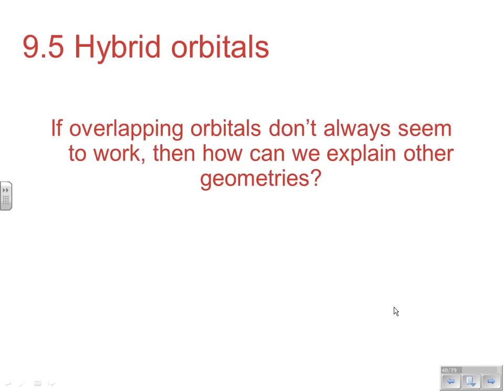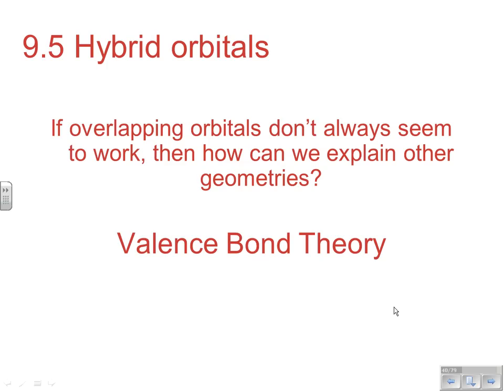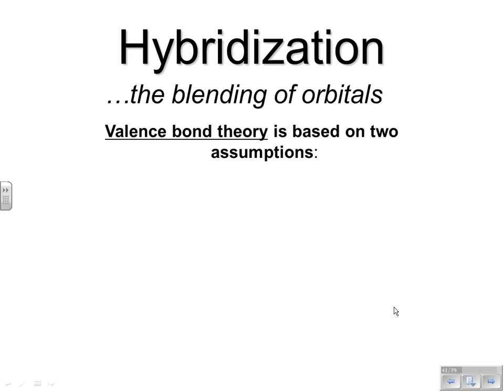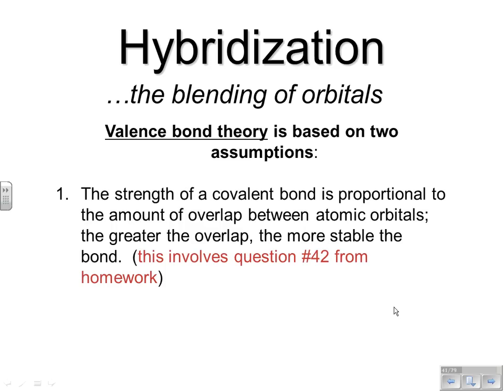What's actually happening is what we call hybrid orbitals — that's what we're getting to in section 9.5. If overlapping orbitals don't always seem to work, how do we explain the geometries we perceive? This is known as valence bond theory. The first fundamental assumption is that the strength of a covalent bond is proportional to the amount of overlap between the atomic orbitals — the greater the overlap, the more stable the bond.